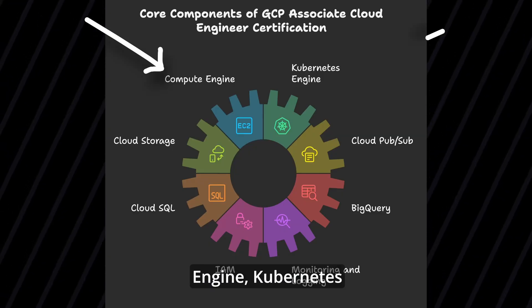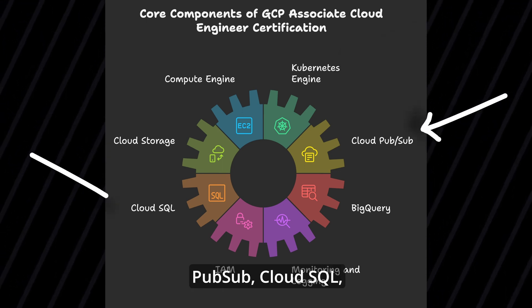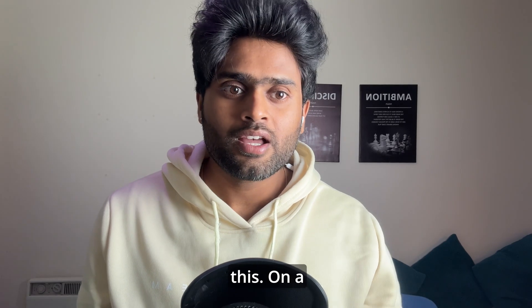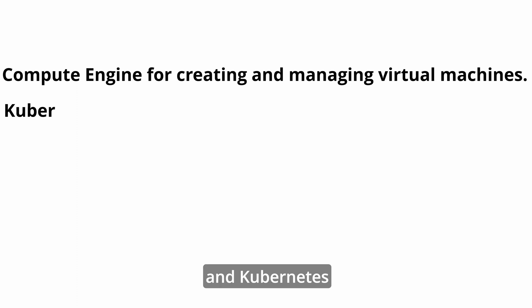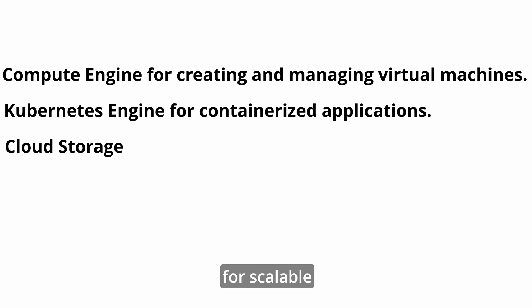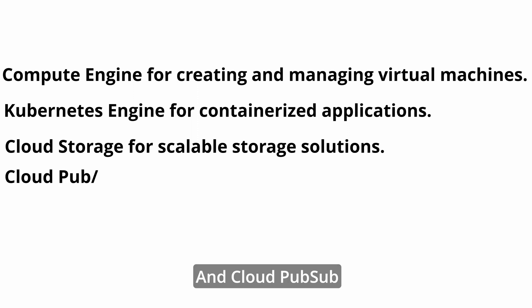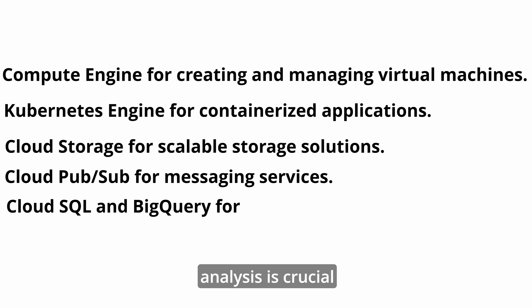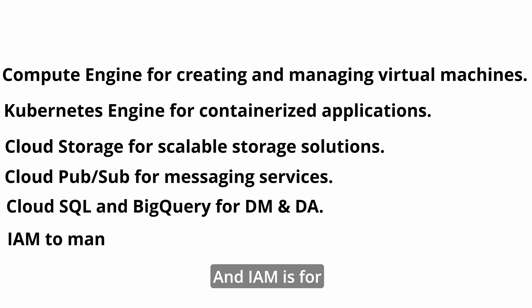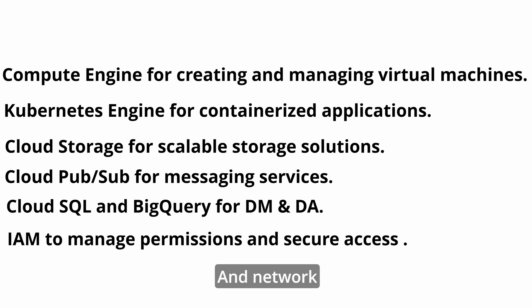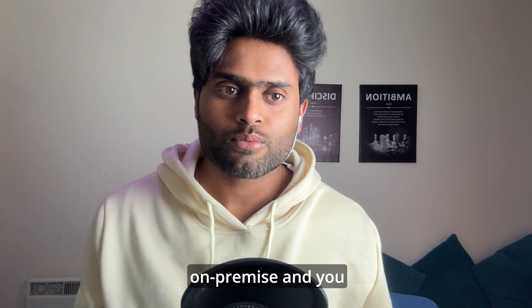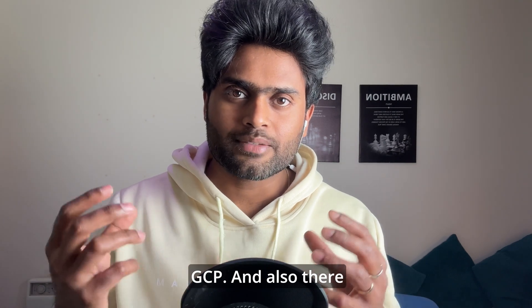What's the syllabus you need to learn? Services include Compute Engine, Kubernetes Engine, Cloud Storage, Cloud Pub/Sub, Cloud SQL, BigQuery, IAM, and networking products. On a high level: Compute Engine is for creating and managing virtual machines; Kubernetes Engine is for containerized applications; Cloud Storage is for scalable storage solutions; Cloud Pub/Sub is for messaging services; Cloud SQL and BigQuery are for database management and data analysis; and IAM is for managing permissions and securing access.